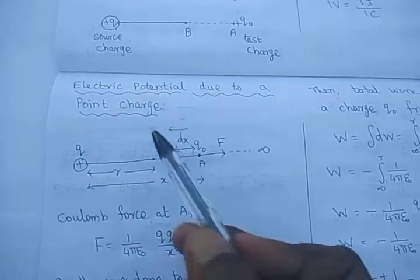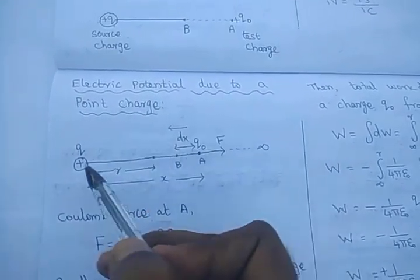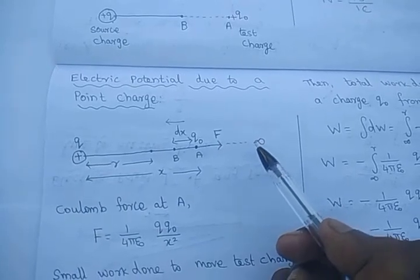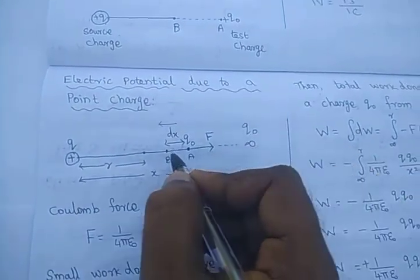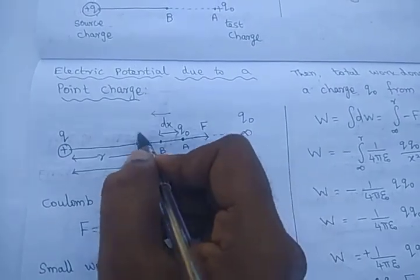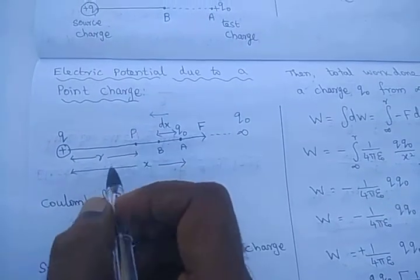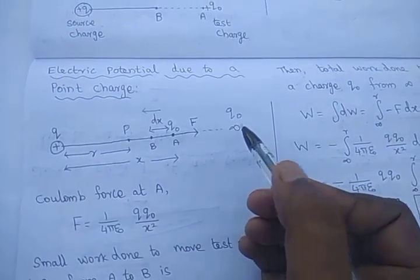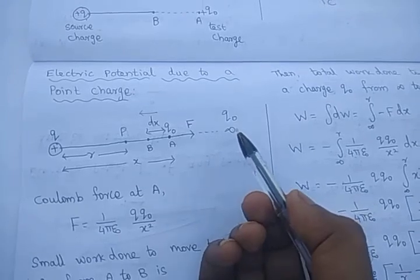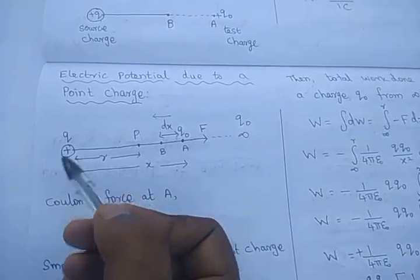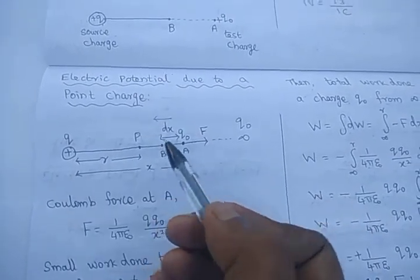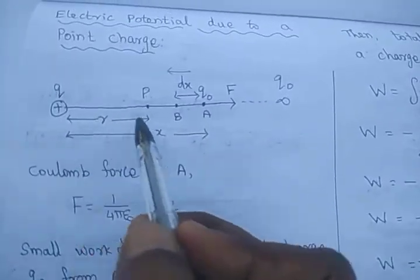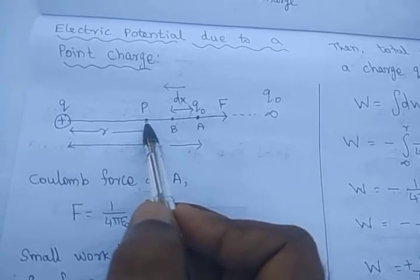Now we are going to derive the expression for electric potential due to a point charge — that means one single charge Q. As per the definition, the test charge must be brought from infinity to the particular point. This is point P. At point P, we are going to derive the expression for potential due to charge Q. For that we need a test charge Q₀. The test charge has to be brought from infinity to that particular point, moving towards the positive charge. When it moves towards the positive charge, work must be done against the electrostatic force.